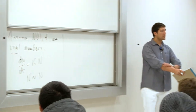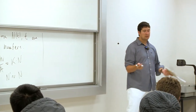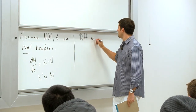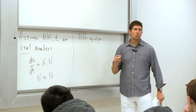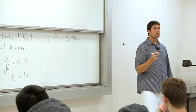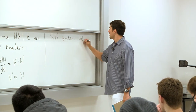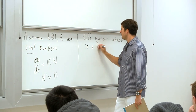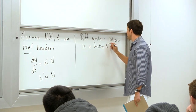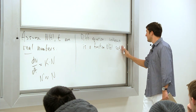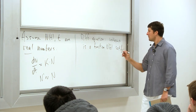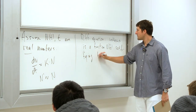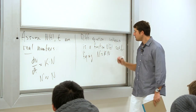This is what we call an ordinary differential equation. A differential equation is an equation where the unknown is a function — in this case, N(t) satisfying N' = kN.